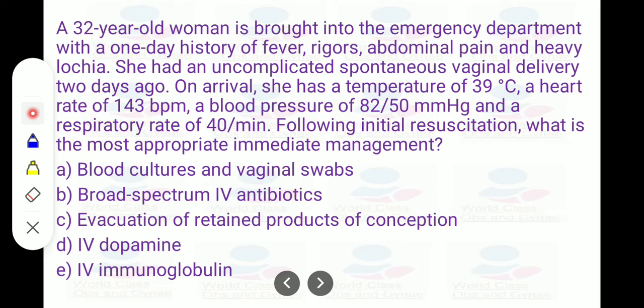Following initial resuscitation, what is the most appropriate immediate management? In this question, the word GBS is not written, but we have to manage the patient and diagnose GBS as well. We are giving the options like blood cultures and vaginal swabs, broad-spectrum IV antibiotics, evacuation of retained products of conception. IV dopamine—we should not go for that because the initial resuscitation has already been done; the patient is a little bit stable now.